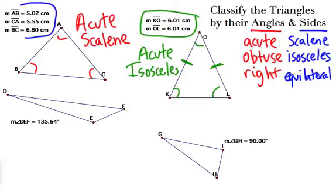Down here on DEF, angle E is clearly obtuse, and all the sides are definitely different. So this is an obtuse scalene.